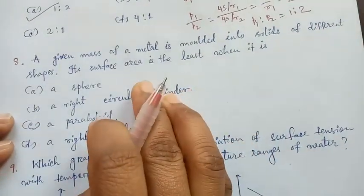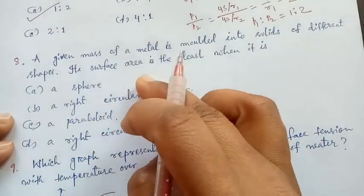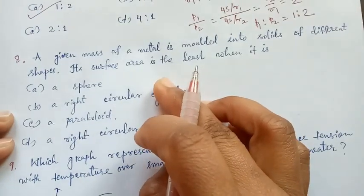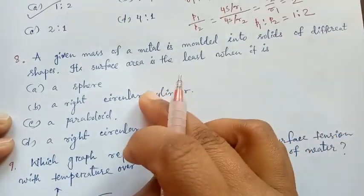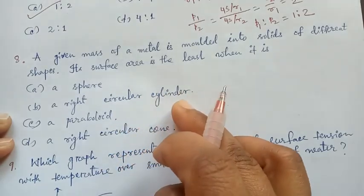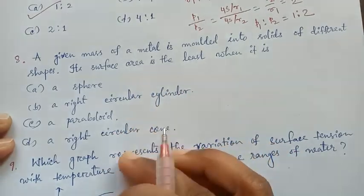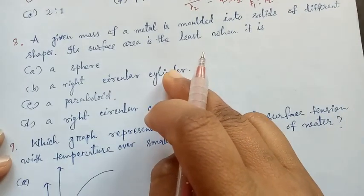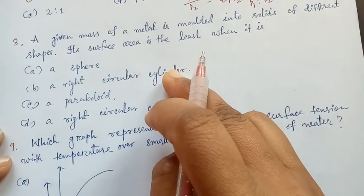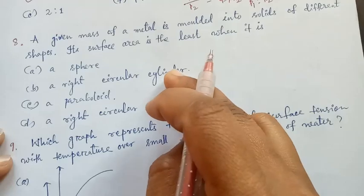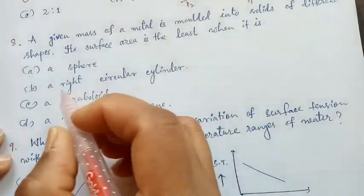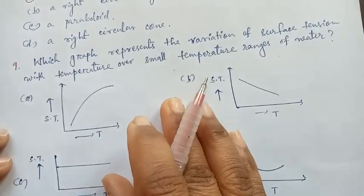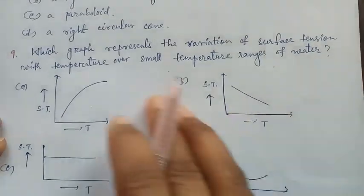Next: a given mass of metal is molded into solids of different shapes. Its surface area is least when it is a sphere, a right circular cylinder, a paraboloid, or a right circular cone. For a given mass, a sphere has the least surface area, so the answer is option A.